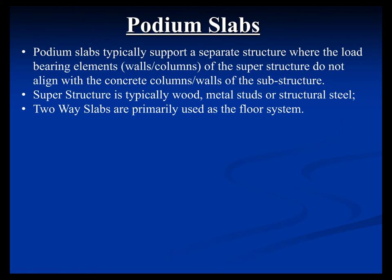Typically two-way slabs are used as the floor system, though one-way slabs and beams have been used. People up north — Washington, Seattle, Oregon — have used long-span structures, meaning beams going 60 to 65 feet with a relatively thin slab for parking, which is very common for large parking structures at airports, stadiums, and casinos. The problem with podium slabs is they can be pretty bouncy.